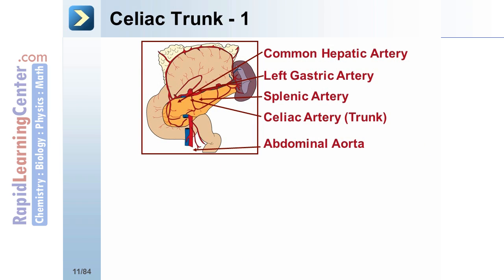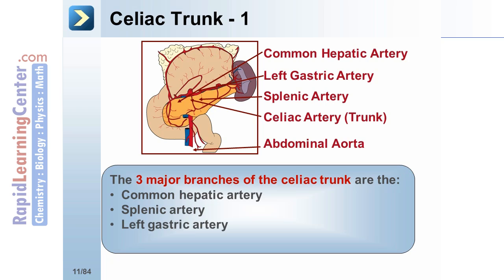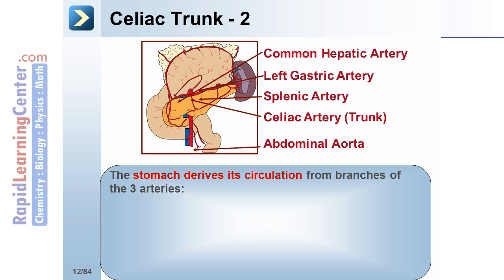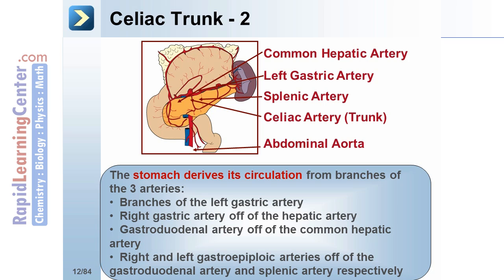The three major branches of the celiac trunk are the common hepatic artery, the splenic artery, and the left gastric artery. The stomach derives its circulation from branches of these three arteries, which include the left gastric artery, the right gastric artery off the hepatic artery, the gastroduodenal artery off the common hepatic artery, and the right and left gastroepiploic arteries off the gastroduodenal artery and splenic artery, respectively.